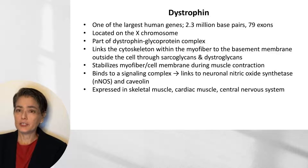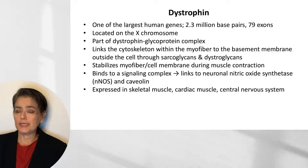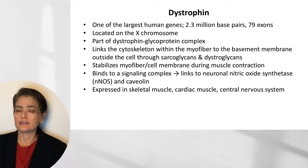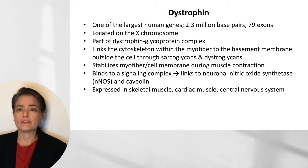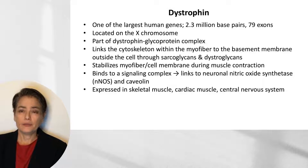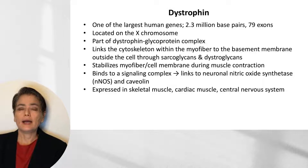Dystrophin is one of the largest human genes at 2.3 million base pairs and 79 exons. The significance of this is that with this great size, we have an increased risk of random mutation. The gene itself is located on the X chromosome, and the protein is part of the dystrophin glycoprotein complex.